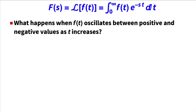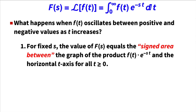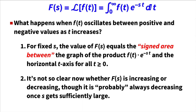Here in video two, we also want to see what happens when the input function f(t) oscillates between positive and negative values. For example, the cosine function. If f(t) truly oscillates above and below the axis, the integral is no longer just an area — it's a signed area between f(t)·e^(−st) and the horizontal axis. It's not clear whether F(s) will be increasing or decreasing, though it probably will always be decreasing once s gets sufficiently large.